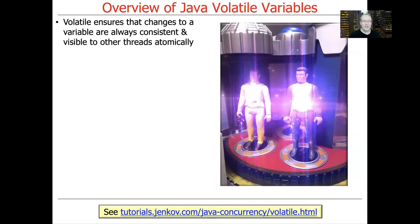What the volatile keyword does is it ensures that changes to a variable — in other words, when it's read from or written to — are always consistent and are always made visible to other threads atomically.